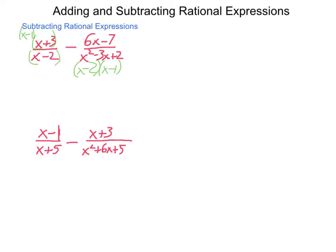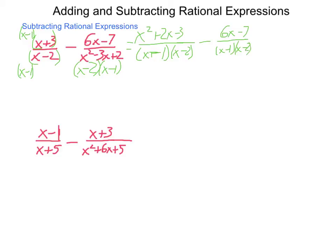That gives the common denominator without changing the value. We'll end up with x minus 1 times x minus 2 as our denominator. Distributing the numerator, I get x squared plus 2x minus 3. From that I'm going to subtract 6x minus 7 over x minus 1 times x minus 2. We have a common denominator, so it goes along for the ride: x minus 1 times x minus 2. For the numerator, we combine like terms — x squared can't combine with anything.